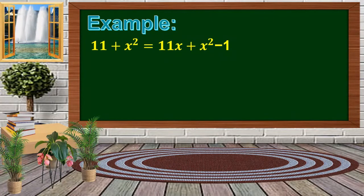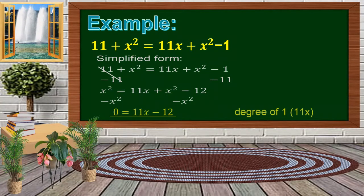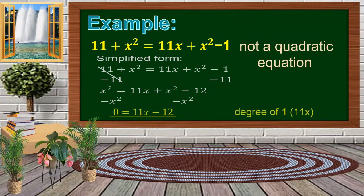How about this example? It looks like a quadratic equation, but we have to simplify it to determine if it really is quadratic. We subtract 11 on both sides to isolate x squared, giving us x squared equal to 11x plus x squared minus 12. Then we remove x squared by subtracting x squared on both sides, leaving 0 equal to 11x minus 12. The degree is 1, so this is not a quadratic equation.